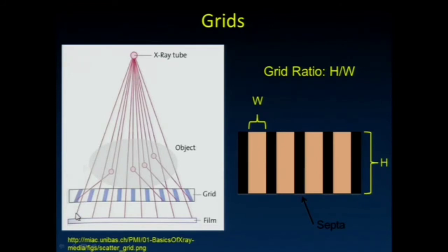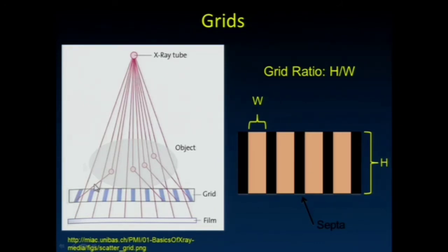Primary x-rays, unchanged in direction, should pass through the holes. Occasionally a primary may strike one of the lead strips and not make it through—so grids reduce primaries as well as scatter. It's just that they reduce scatter much more than they reduce primaries, so the overall scatter-to-primary ratio gets much better.